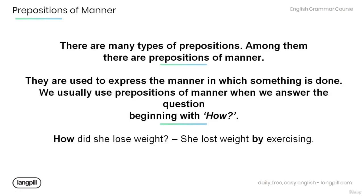There are many types of prepositions. Among them are prepositions of manner. They are used to express the manner in which something is done. We usually use prepositions of manner when we answer the question beginning with 'how'. For example: How did she lose weight? She lost weight by exercising. The preposition of manner 'by' expresses the manner in which she lost weight.